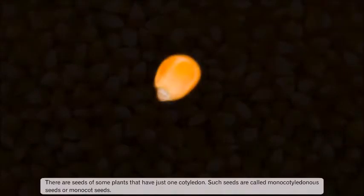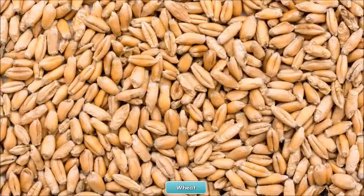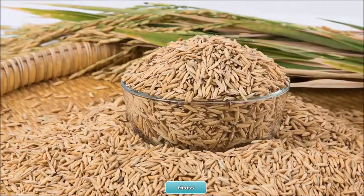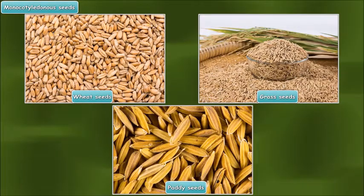Unlike dicot seeds, there are seeds of some plants that have just one cotyledon. Such seeds are called monocotyledonous seeds, or monocot seeds. Such seeds cannot split into two equal halves. Seeds of wheat, grass, and paddy are monocotyledonous seeds.